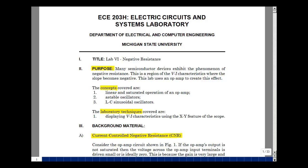This lesson deals with lab number six, which is entitled negative resistance. Many semiconductor devices exhibit a phenomenon called negative resistance — a region of their voltage-current plot that has a slope that becomes negative. We can create this effect with an op-amp. The concepts we're going to cover are linear and saturated operation of an op-amp, astable oscillators, and LC sinusoidal oscillators.